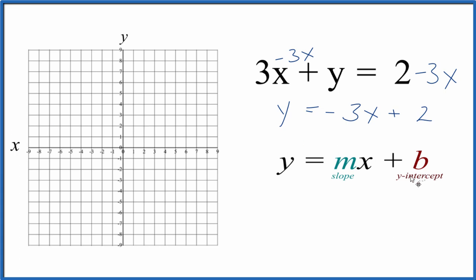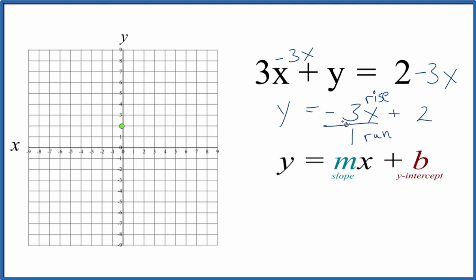So the y-intercept is 2 — that's where we cross the y-axis right here at 2, so that's where our line will cross the y-axis. Then the slope — let's call that negative 3 over 1 because then we can say rise over run. It's still just negative 3, which is divided by 1, but we have our slope as negative 3 over 1.